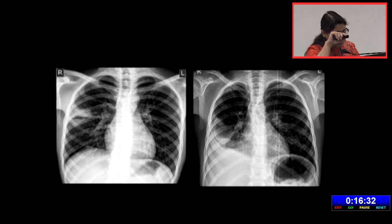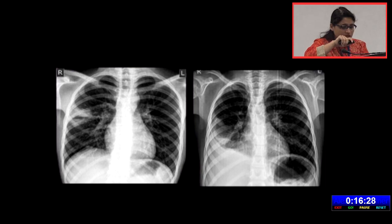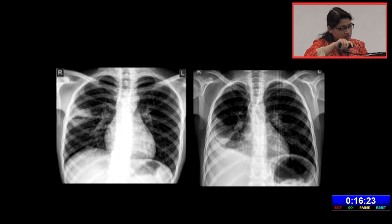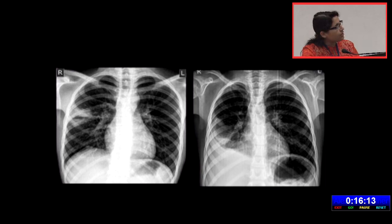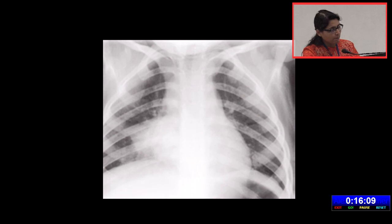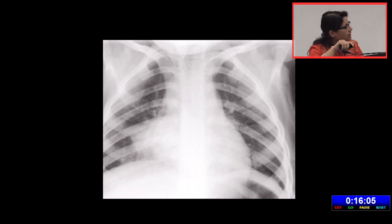In the second case, you can see a well-defined opacity in the right lower zone causing silhouetting of the right hemidiaphragm, with associated pleural effusion along the right costal margin and some blurring of the right lower cardiac border. So this is right lower and middle zone consolidation — middle lobe consolidation. This is a classic case of right middle lobe consolidation.